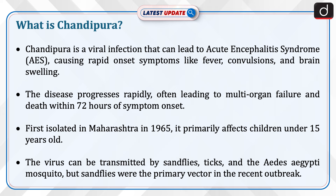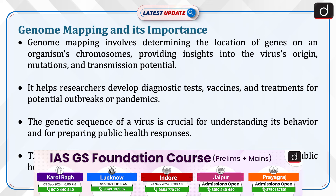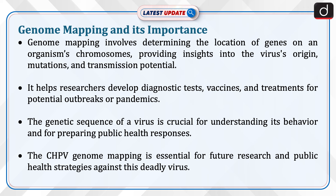Sand flies were the primary vector in the recent outbreak. Genome mapping involves determining the location of genes on an organism's chromosomes, providing insights into the virus's origin, mutations, and transmission potential. It helps researchers develop diagnostic tests, vaccines, and treatments for potential outbreaks or pandemics. The genetic sequence of a virus is crucial for understanding its behavior and for preparing public health responses. The CHPV genome mapping is essential for future research and public health strategies against this deadly virus.